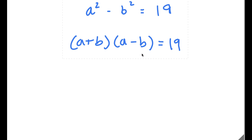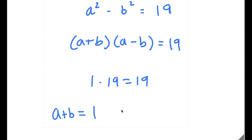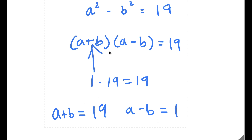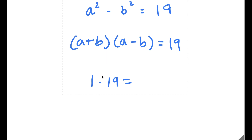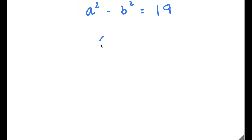Now, 19 is equal to 1 times 19. These are the only two factors of 19 because 19 is a prime number, meaning its only factors are 1 and itself. So we can think of a plus b as 19 and a minus b as 1, because that gives us 1 times 19 which equals 19. So we know a plus b is equal to 19 and a minus b is equal to 1.